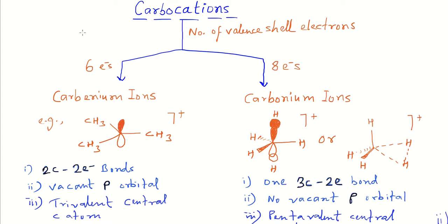Today's topic of discussion is carbocations — the types of carbocations, their formation, and their stabilization. In organic chemistry we deal with carbocations very often, in reactions like SN1 reactions, E1 reactions, and many other types of reactions where carbocations are involved as reactive intermediates.